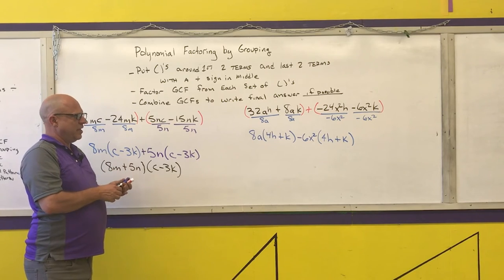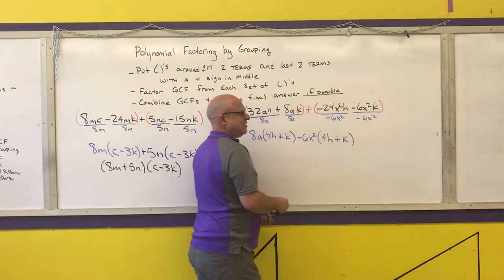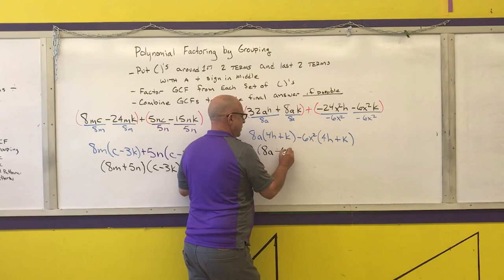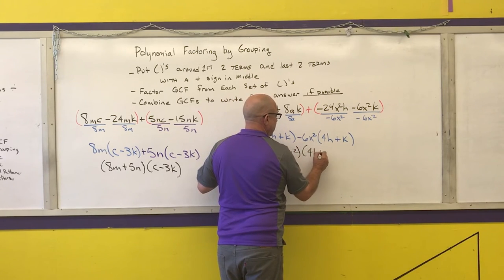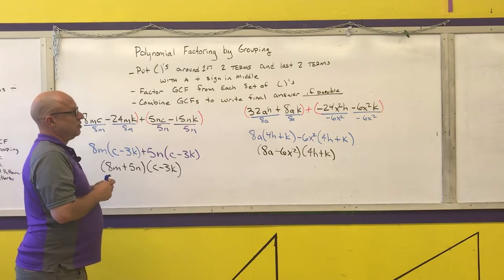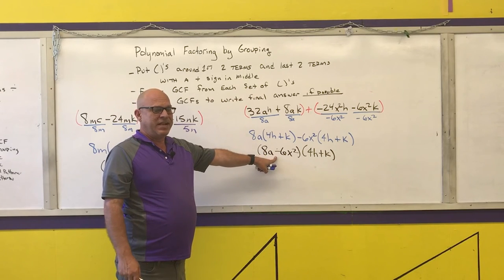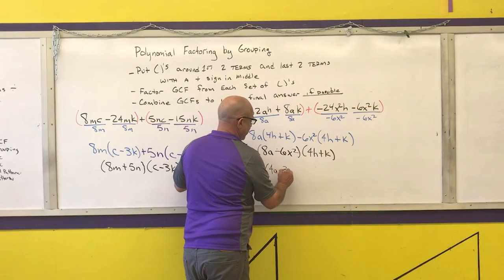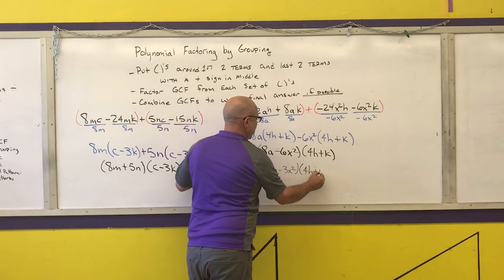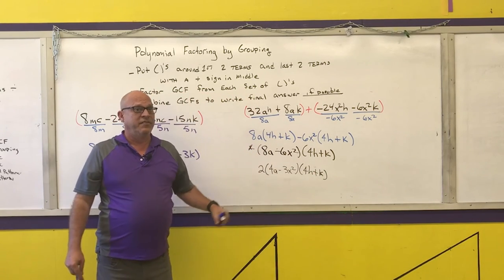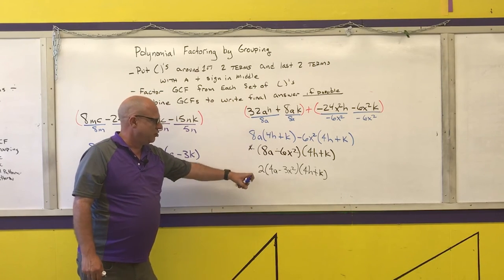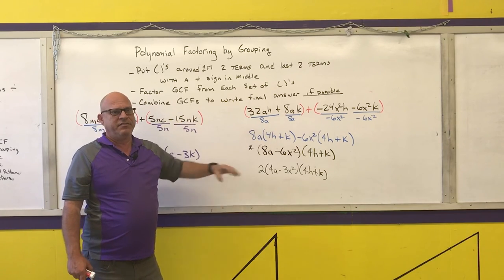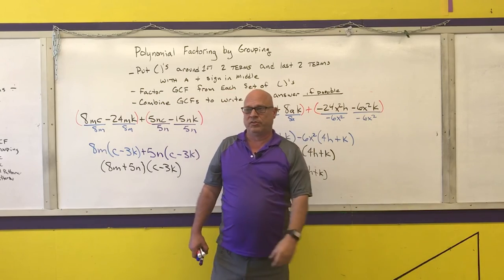Last step — combine the greatest common factors to write the final answer if possible. Check that what's inside the parentheses is the same, then combine what's outside the parentheses. Now notice: I can still pull a greatest common factor out of the left group — I can pull a 2 out. So if I pull that 2 out, I'm left with 4A minus 3X squared, times 4H plus K. If told to factor by grouping only, you're done at the combined step. If told to factor completely, pull all common factors out — and you could have pulled that 2 out in the very first step, since 2 goes into every single term.